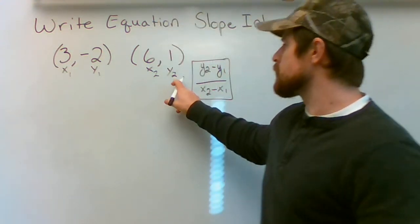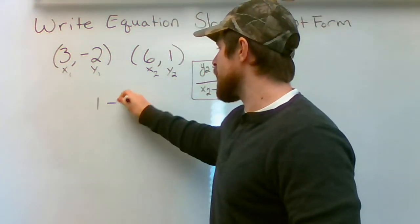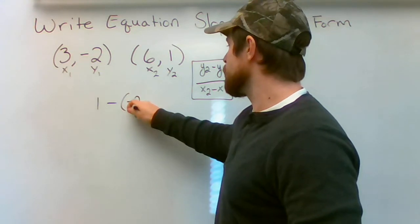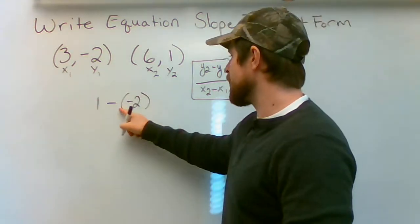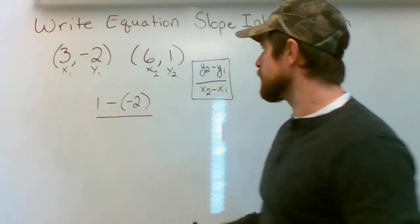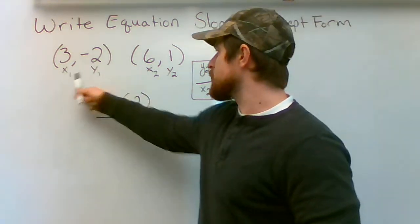So I'm going to take y2 which is a 1. I'm going to subtract negative 2 which is my y1. So 1 minus negative 2 which is really just adding. Then I'm going to take x2 minus x1.